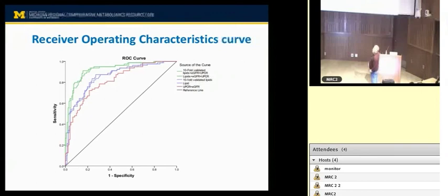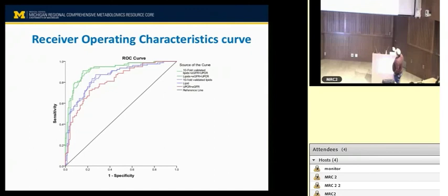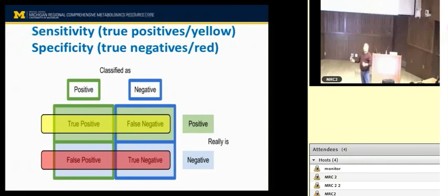The ideal classification model would go all the way up to one and then flatten, corresponding to all predictions landing on the diagonal of the confusion matrix. Farsad's key point was that by adding the lipidomic panel, he gets better performance — more samples line up on the diagonal. The ROC curve is derived from the confusion matrix, so all these measures are intertwined.